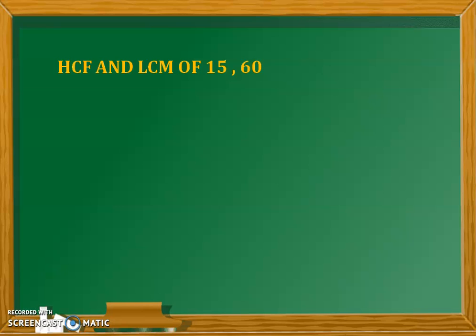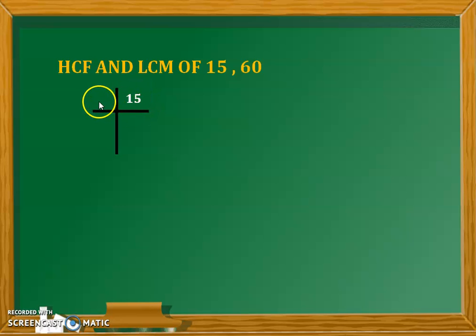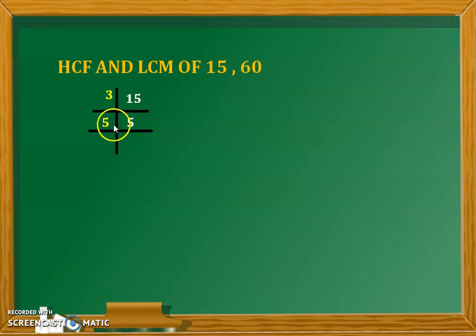Let's start. I will begin with the prime factor method. For that we will make a vertical arrangement and place the number in. Using the divisibility rule we will start with the division. It will divide by 3. And 5 is a prime number, so 5 ones are 5. These are the factors of 15.